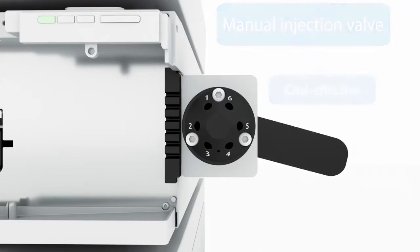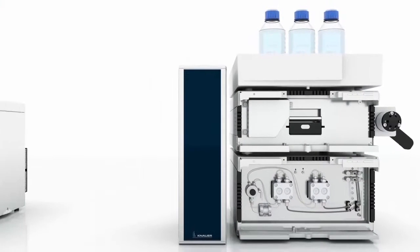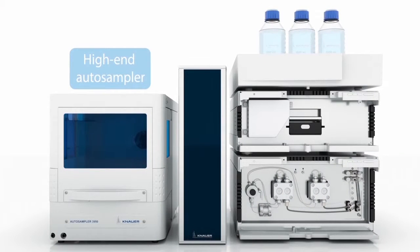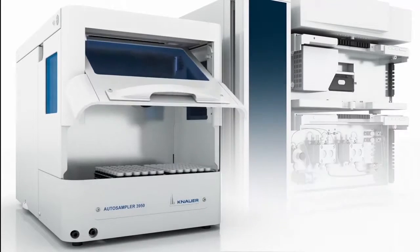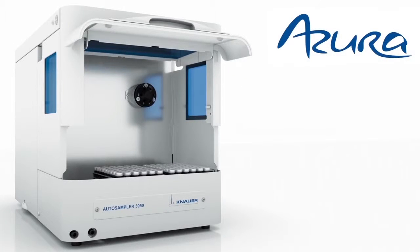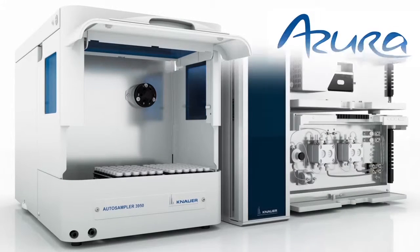Use a cost effective manual injection valve to inject your sample up to 1000 bar. Or choose between different high-end autosamplers like the shown autosampler 3950 with injection volumes from 0.1 microliters to 10 ml. With optional sample cooling, it traces up to 108 standard vials for high throughput analysis.